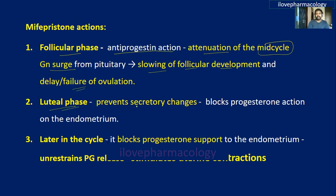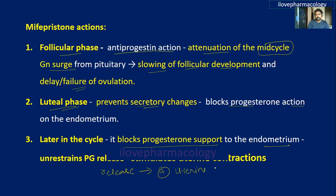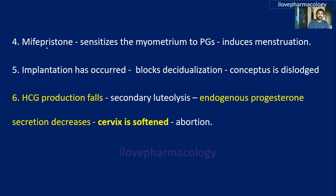During the luteal phase, it prevents secretory changes by blocking progesterone action on the endometrium. During the later luteal phase, it blocks progesterone support to the endometrium, thereby unrestraining prostaglandin release, increasing prostaglandin sensitivity of the uterus and stimulating uterine smooth muscle contractions. Mifepristone also sensitizes the myometrium to prostaglandins, thereby inducing menstruation.